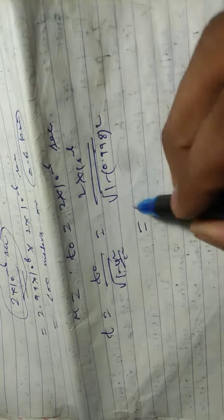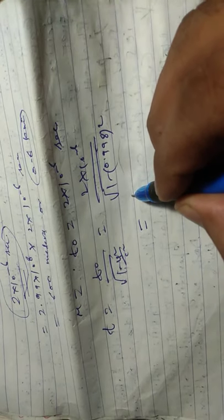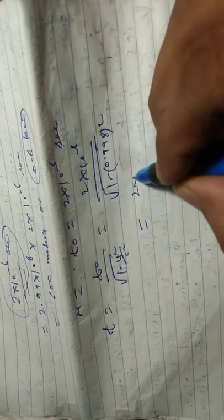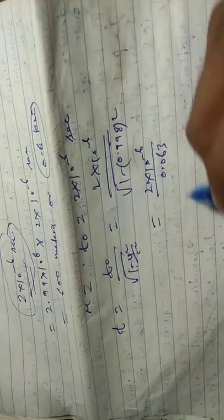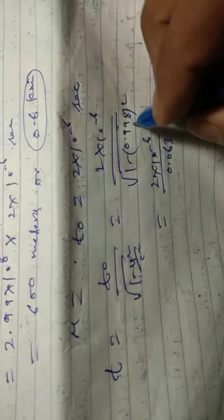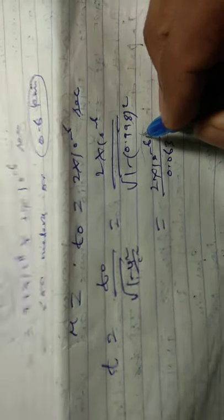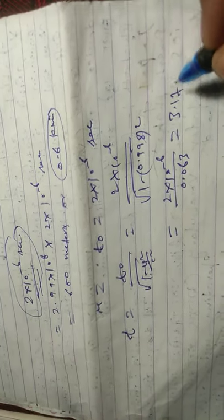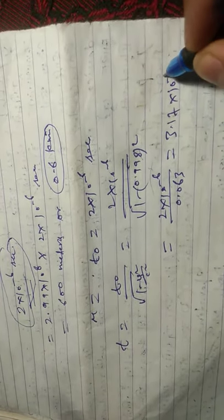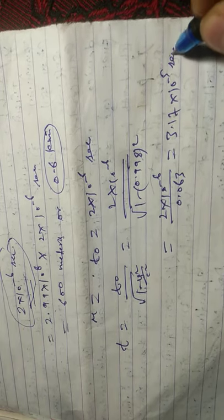And this is equal to 2 × 10^-6 divided by 0.063, and this is equal to 3.17 × 10^-5 seconds.